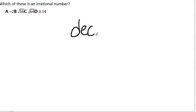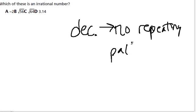Keep in mind that if you see a decimal, it's only irrational if there is no repeating pattern and no end. It's never going to end or have some kind of repeating pattern. That's what an irrational number looks like as a decimal.